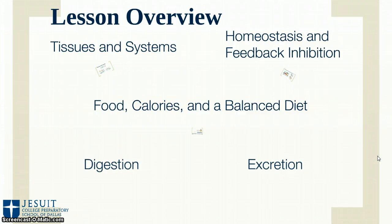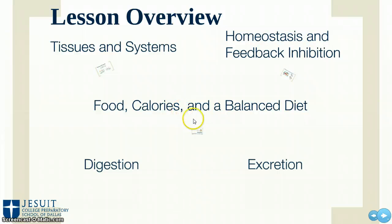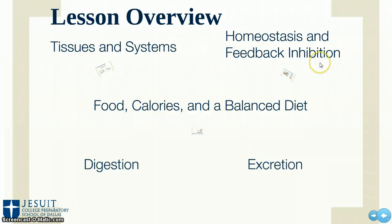What I'm going to talk about in this vodcast is tissues and systems. We're going to review the human body and how cells make tissues, and tissues make up the different organ systems of the body. We'll then quickly overview homeostasis and feedback inhibition — define these terms and talk about what they mean. I'll also give you a quick overview on food, calories, and a balanced diet, and how it supports our tissues, systems, homeostasis, and feedback inhibition.